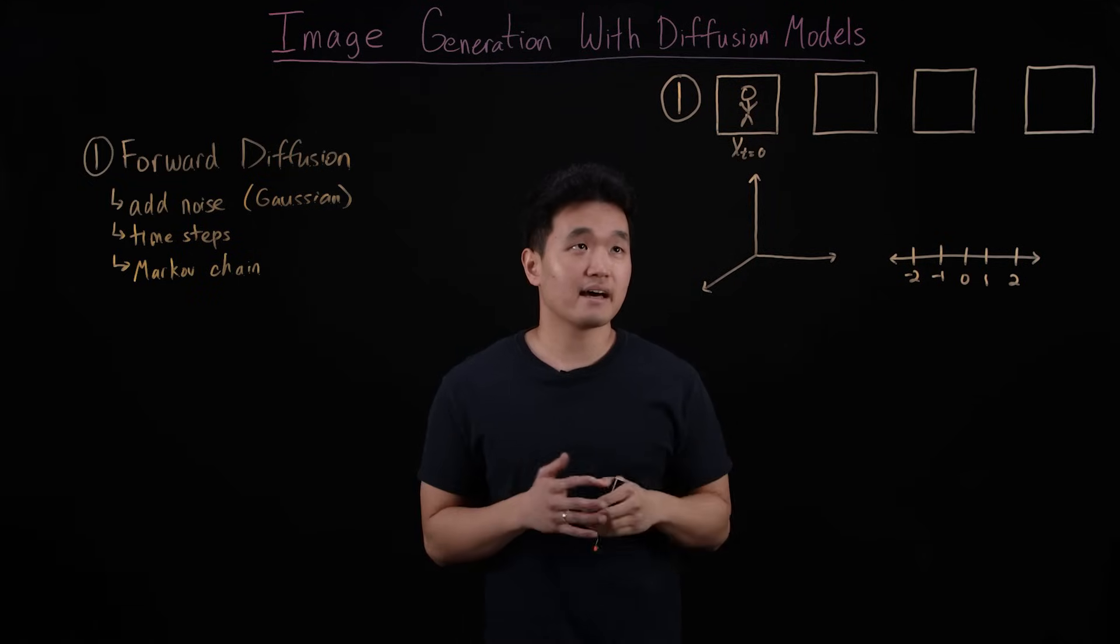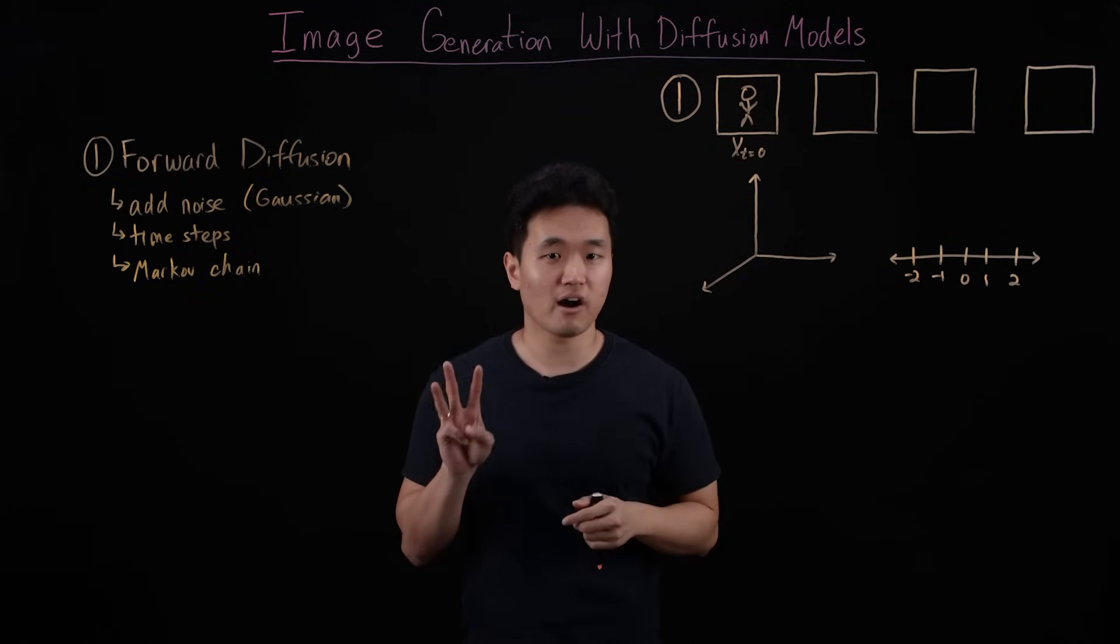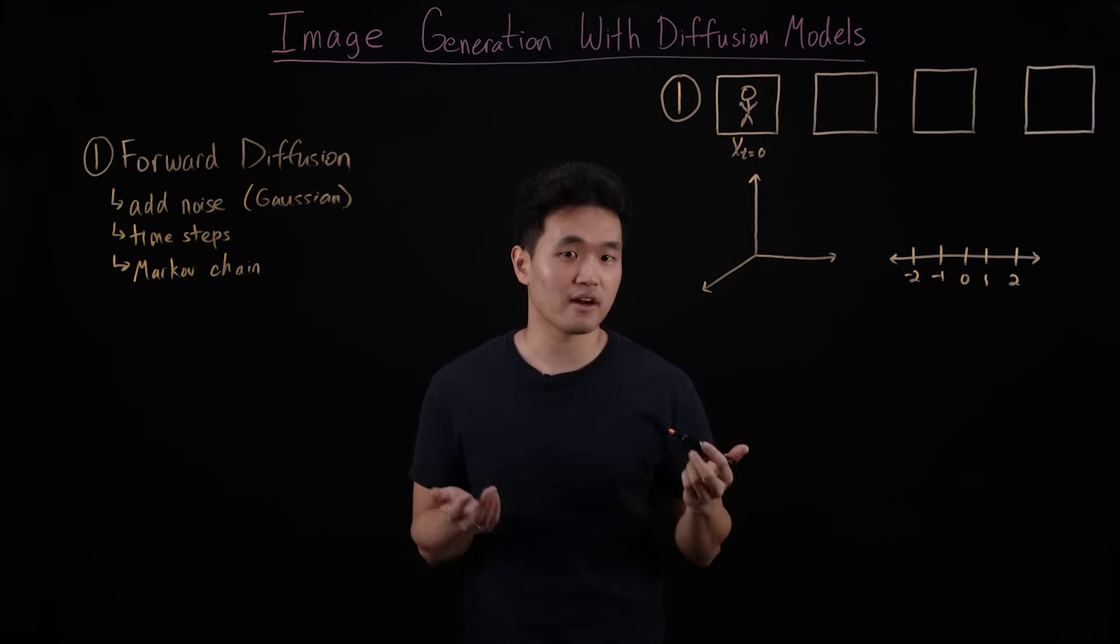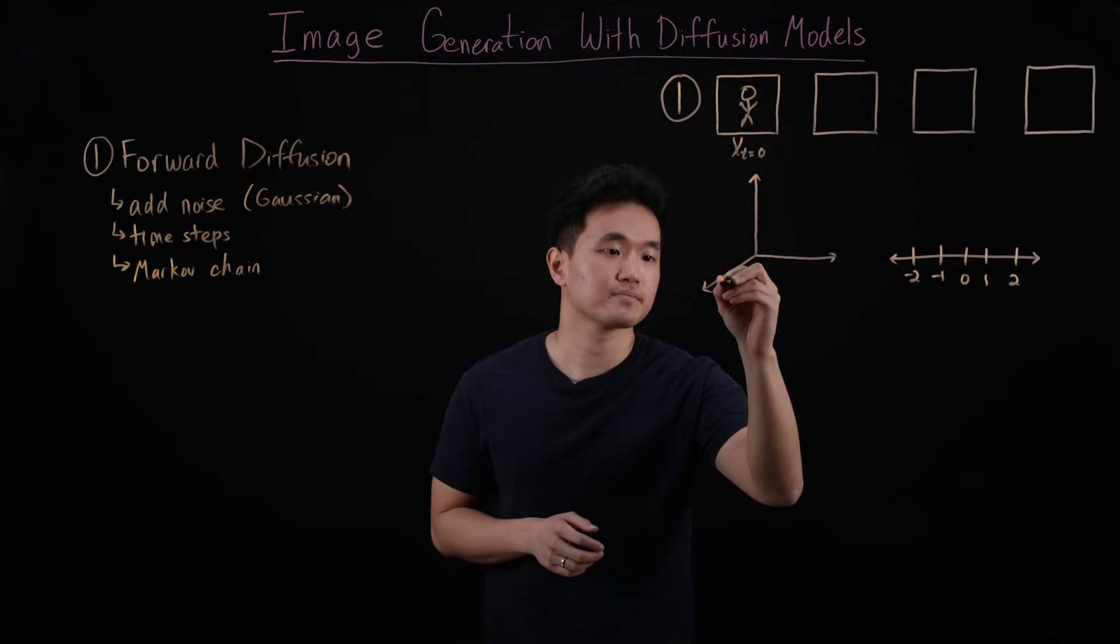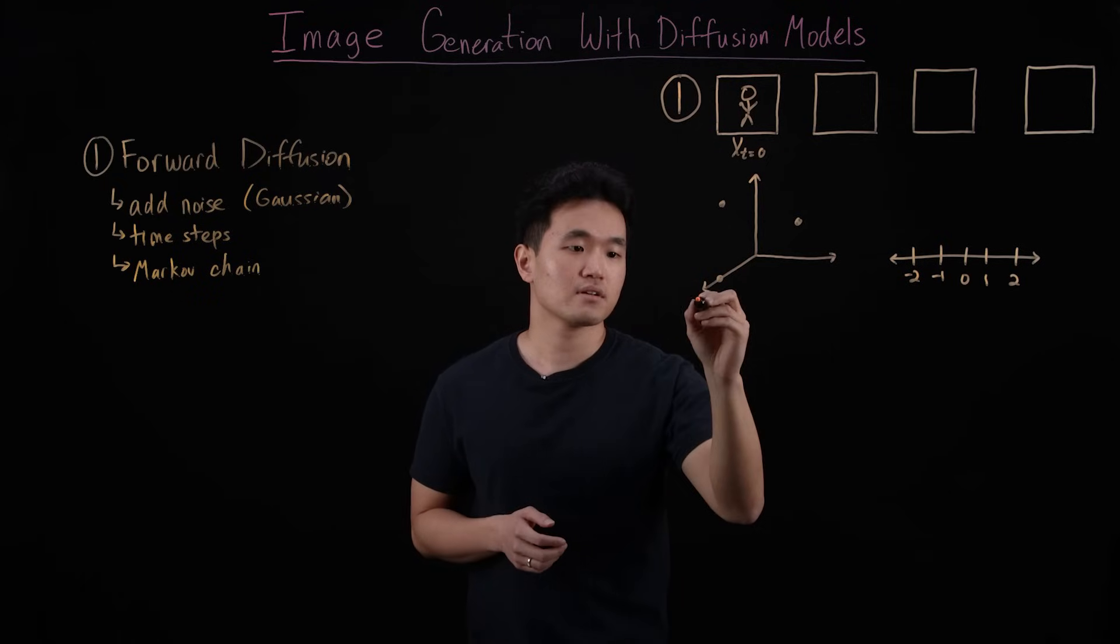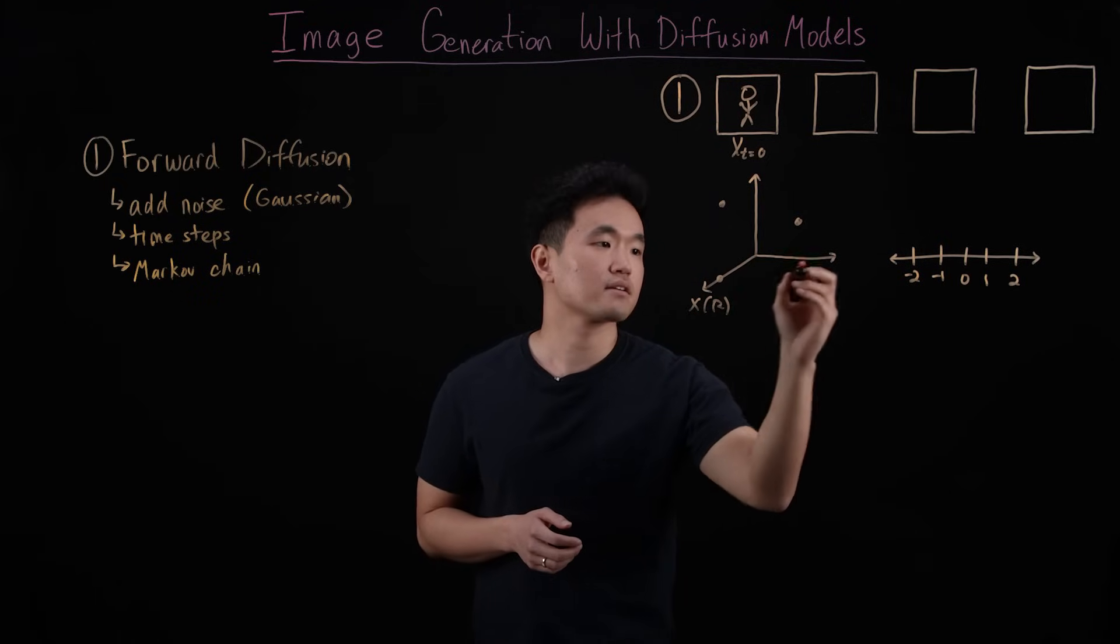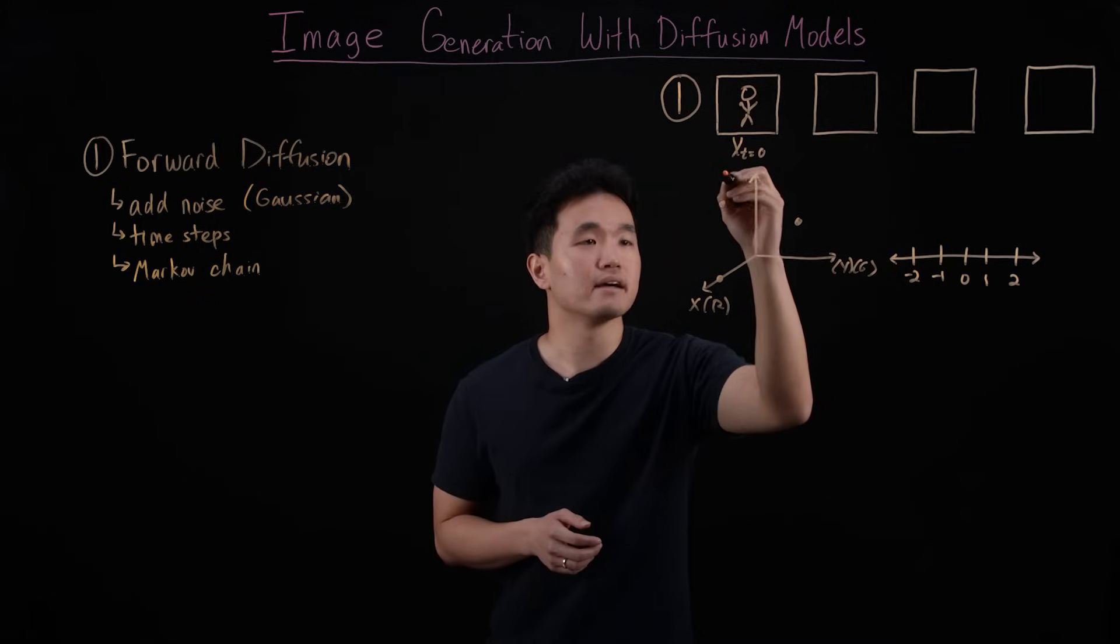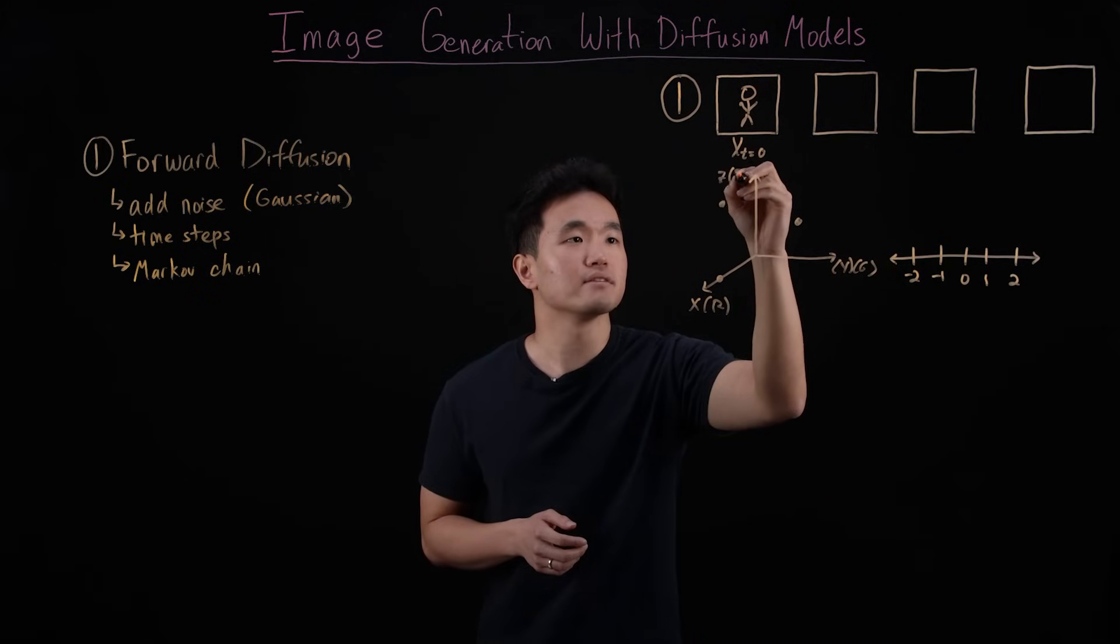For simplicity, imagine that this image is made of just three RGB pixels, and we can represent the color of these pixels on our x, y, z plane here. Where the coordinates of each of our pixels correspond to their r, g, and b values.